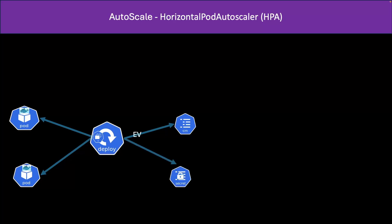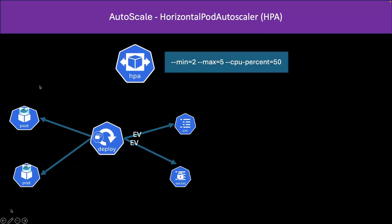In a normal scenario, these are exposed by environmental variables. Now we create an HPA. As per our requirement, if the traffic increases it should create pods automatically. The requirement would be: minimum is two and maximum number of pods is five, on the basis of CPU percentage equal to 50. If a pod's CPU usage exceeds 50% of whatever we have mentioned in the deployment configuration file, then it should create a new pod, up to a maximum of five.